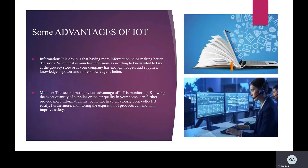As for some advantages: first, information. It is obvious that having more information helps make better decisions. Whether it is a mundane decision like needing to know what to buy at the grocery store, or whether your company has enough supplies, knowledge is power and more knowledge is better. The second advantage of IoT is monitoring. Knowing the exact quantity of supplies or the air quality in your home can provide more information that could not previously be collected easily. Furthermore, monitoring the expiration of products can and will improve safety.